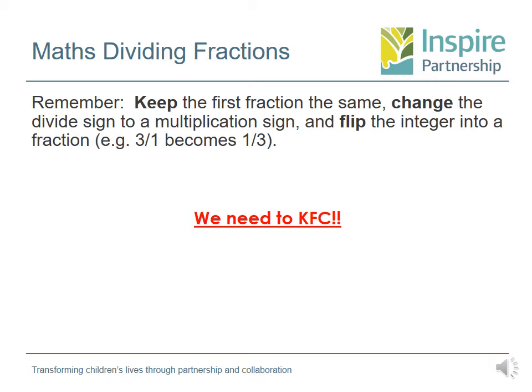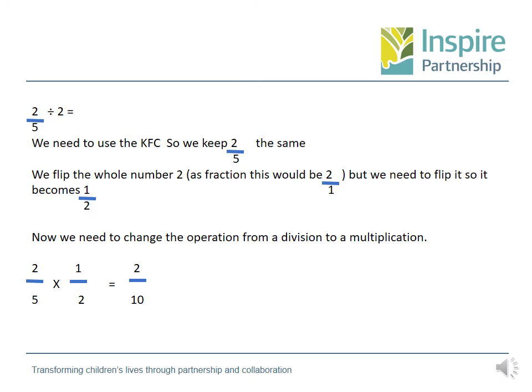I hope you're really not hungry while you're listening to this! So the first calculation we're going to be looking at is just over here where I'm putting the cursor, which is 2 fifths divided by 2. To find out the answer to this question, we need to use the KFC. So we keep 2 fifths the same and we flip the whole number 2. As a fraction, the whole number 2 would be 2 over 1, but we need to flip it, so it becomes 1 over 2. Can you see how our numbers are flipped over? They've changed.